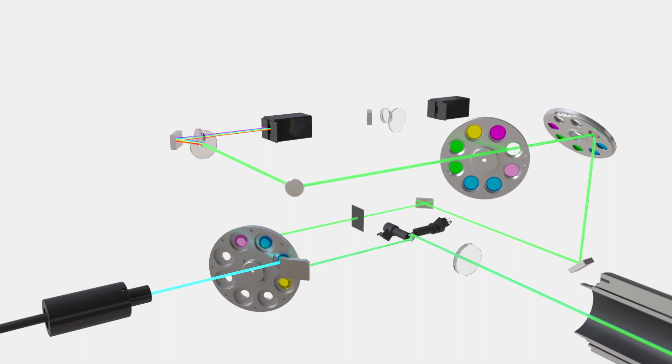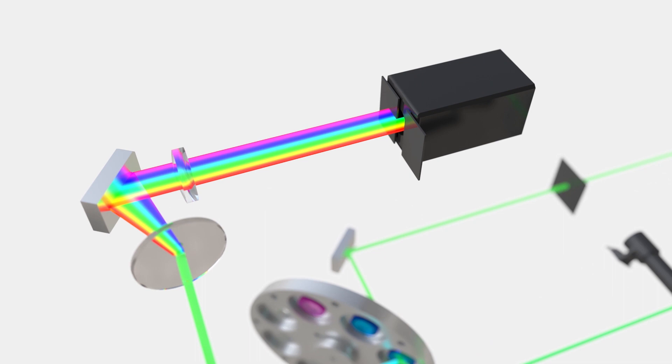At the detector, TrueSpectral technology employs a volume phase hologram to diffract light with up to three-fold higher transmission efficiency versus reflection gratings.